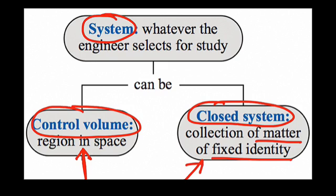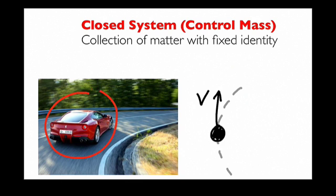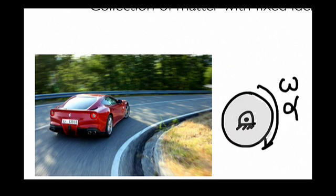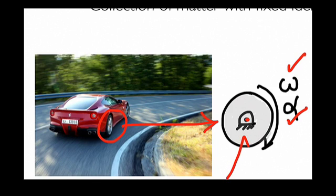Let me illustrate the closed system. In modeling a car, I can idealize it as a particle shown from the top going around a curved path — the car is a particle of mass m. That's one example of a closed system. A second example: I could select a wheel in fixed-axis rotation about a center point, spinning at a rate of omega and accelerating at a rate of alpha. This wheel model is a closed system because it always contains matter of fixed identity.